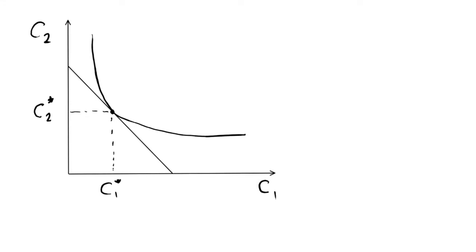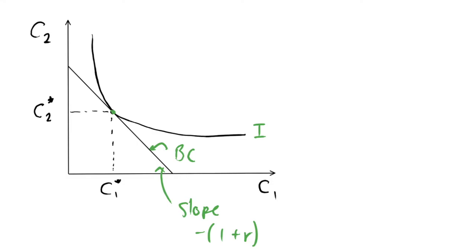To add a little more context: what we've actually done is a simple maximization of an indifference curve or preference relation with respect to the budget constraint, looking for the optimality condition where the two are tangent. As noted in previous videos, the slope of the budget constraint is minus (1 + r), representing the cost of substituting consumption across two time periods. The slope of the indifference curve is the marginal rate of substitution (MRS).